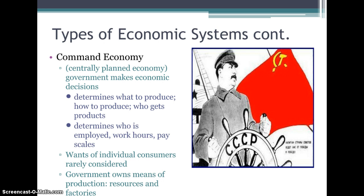The next type of economic system is called a command economy, also called a centrally planned economy. It's usually part of a very strong government system where the government has a lot of power and makes most of the decisions instead of the people. The government determines what to produce, how to produce it, and who gets the products. The government determines who is employed, what their work hours are, and what their pay scales are. The wants of individual consumers are rarely considered — it's more the wants of the group or the whole country — and the government owns all of the means of production: all the resources, all the factories, all the land.